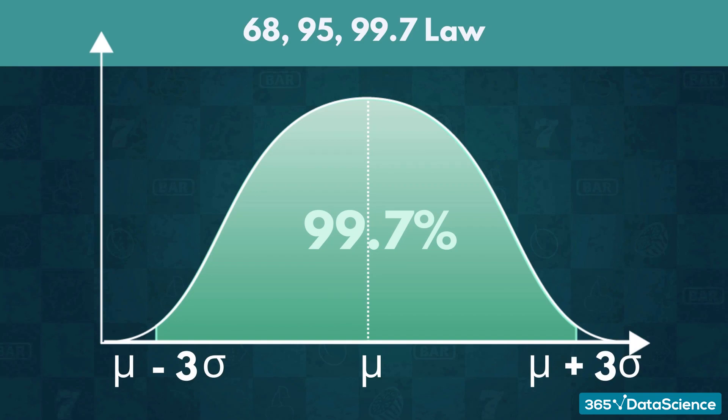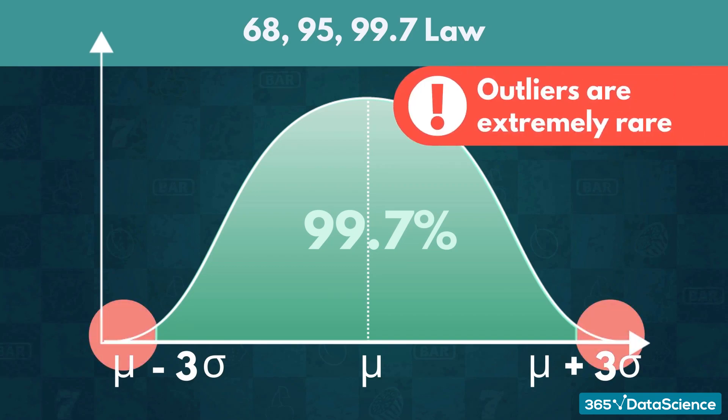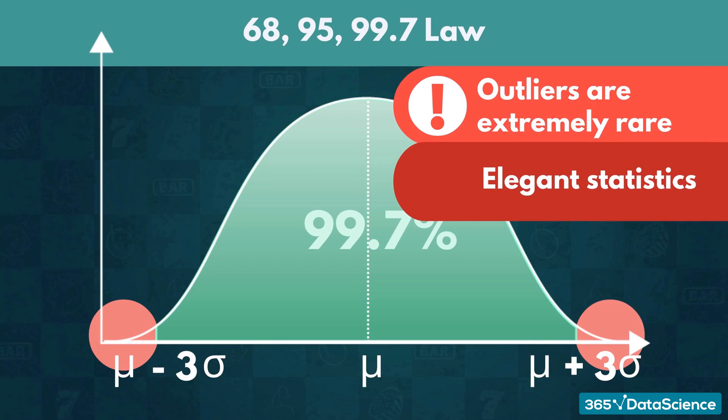The last part really emphasizes the fact that outliers are extremely rare in normal distributions. It also suggests how much we know about a dataset if we only have the information that it is normally distributed.